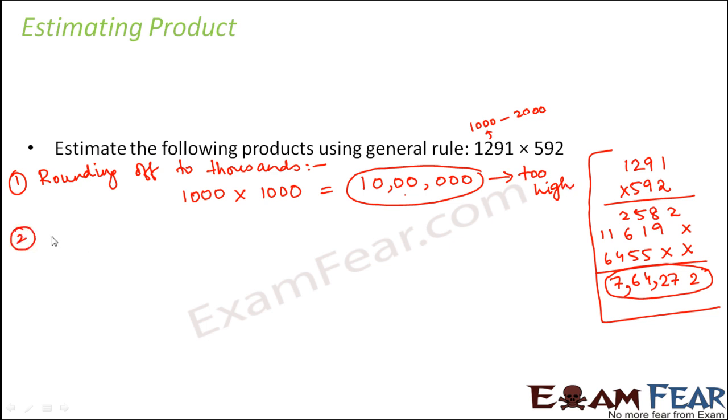Now let us try to round it off to 100. In that case, 1291 would lie between 1200 and 1300, so 1291 would be closer to 1300, so this can be approximated to 1300. And 592 would lie between 500 and 600. 592 would be closer to 600, so this can be approximated as 600. So 1300 into 600 will be 780,000.